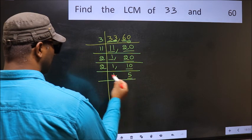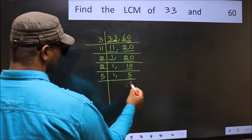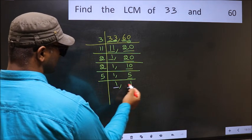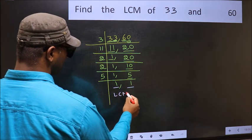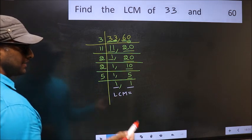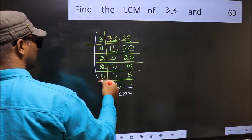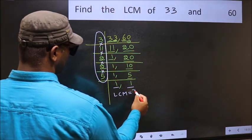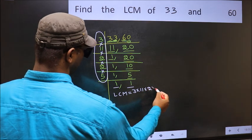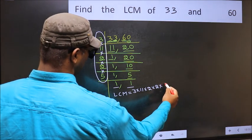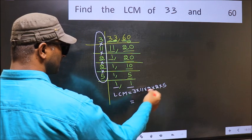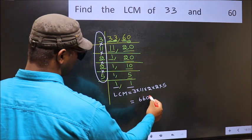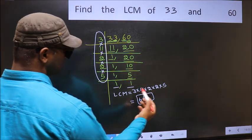Now here we have 5. 5 is a prime number. So 5 times 1 is 5. So we got 1 in both the places. So our LCM is the product of these numbers. That is 3 into 11 into 2 into 2 into 5. When we multiply these numbers, we get 660 is our LCM.